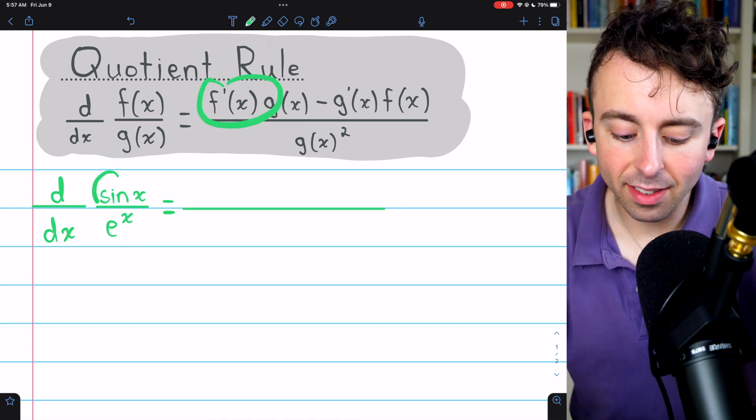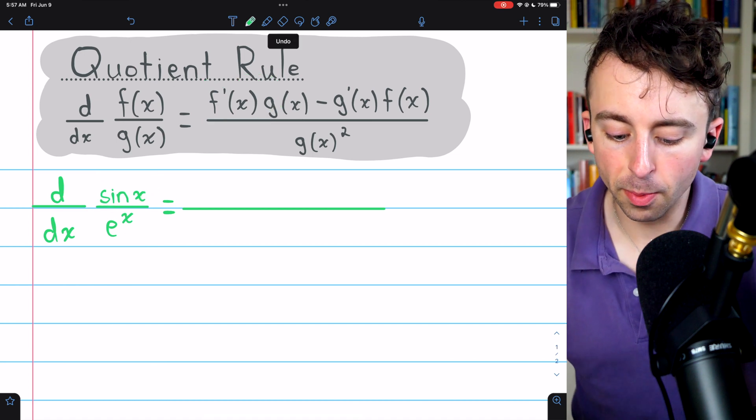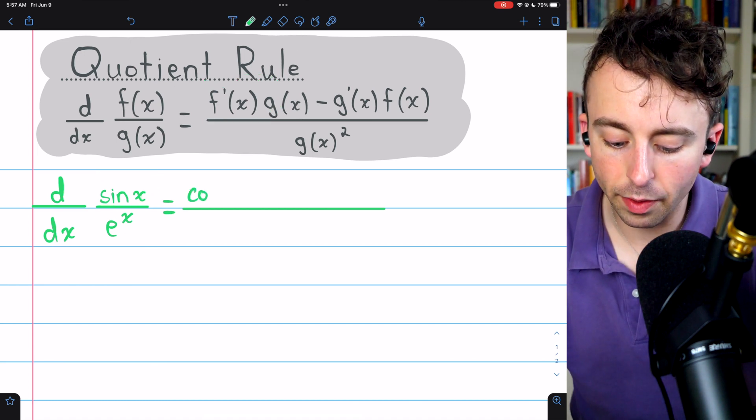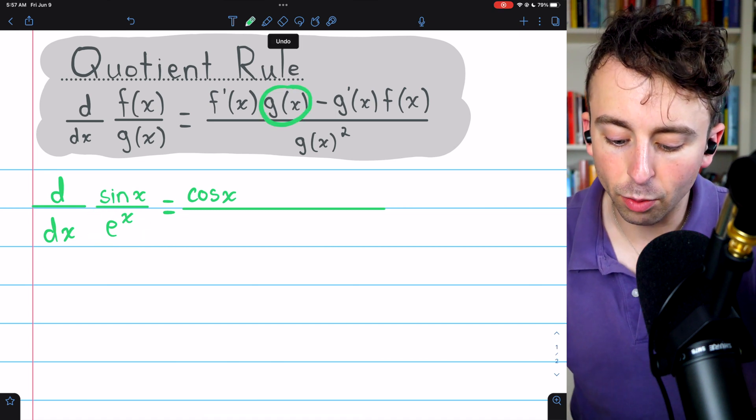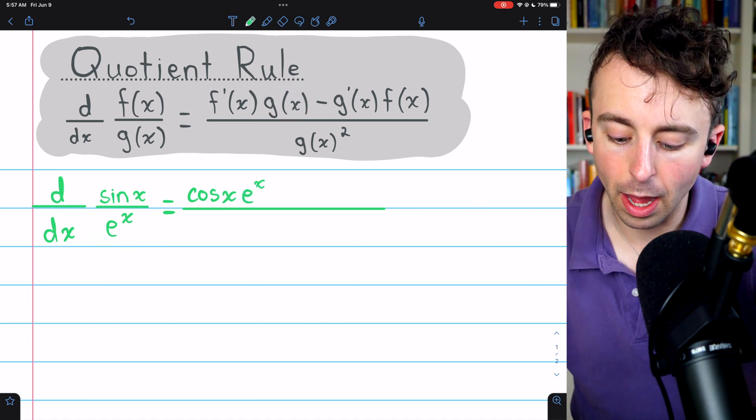Beginning with f prime, that's the derivative of the numerator. The numerator is sin x, and its derivative is cos x. Then we multiply that by g of x, which is the denominator, so multiply by e to the x.